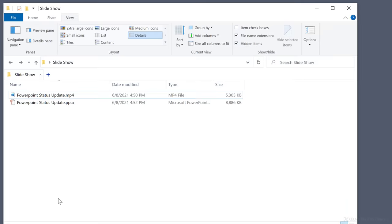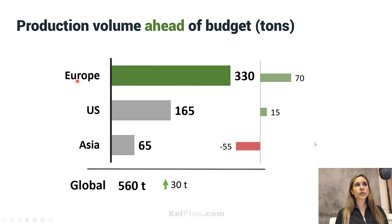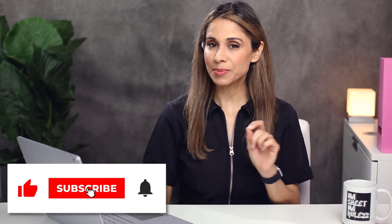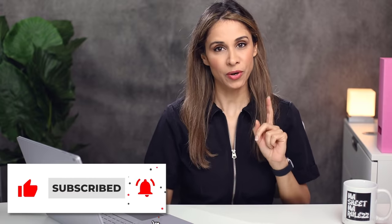Let's close everything and test the PPSX file. The moment someone opens this and double clicks it, it's going to open in slideshow mode. They can go through the slides this way. So these are the different options you have when you record your slideshow. I hope you enjoyed this comprehensive tutorial. Please give it a thumbs up if you did, and subscribe if you aren't subscribed already. I'll see you in the next video.